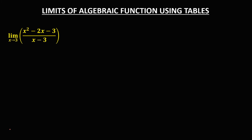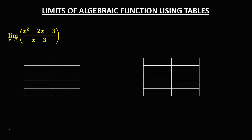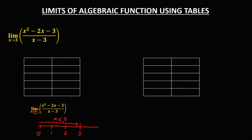To solve for this limit using tables, first for the left-side limit — to the left of positive 3 on a number line. As x approaches positive 3 from the left, x is less than positive 3. To solve for y, we pick numbers closer to 3: 2.999, 2.99, 2.5, and positive 2.